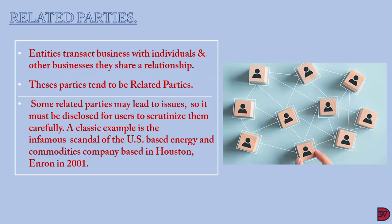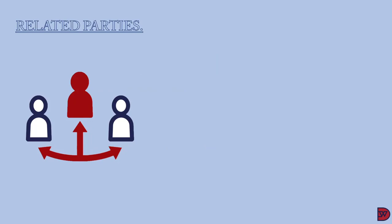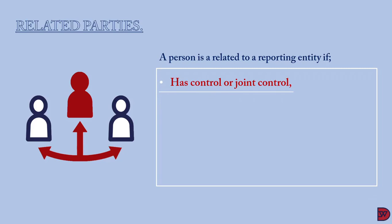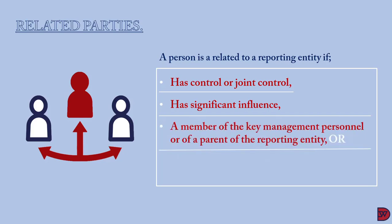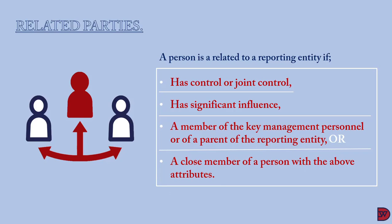A person is related to a reporting entity — that is, a business preparing its financial statements — in the following situations: first, if the person controls or jointly controls the reporting entity, where control is as defined in IFRS 3 Business Combinations, generally holding more than 50% of shares; second, if the person does not control but has significant influence, also found in IFRS 3; third, if the person is a key management personnel of the reporting entity or of a parent of the reporting entity; and fourth, if that person is a close member of the family of any person who has control, joint control, significant influence, or is a member of key management.